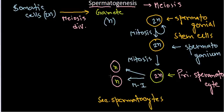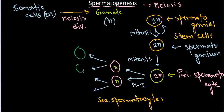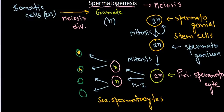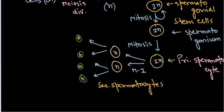After this stage, the secondary spermatocytes pass through meiosis two, and meiosis two is essentially the duplication of the cell, similar to mitosis. Each of those cells gets duplicated, producing cells with n number of chromosomes. These are termed early spermatids, and all of them contain n number of chromosomes.